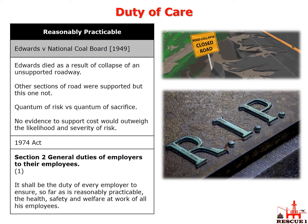It's important to get a full grasp on the reasonably practicable side of this case. What the judge was actually saying when he made his ruling was that if the cost to reduce the dangers is so disproportionate to the level of risk and the likelihood of it occurring, then those measures don't need to be taken. It's also important to remember that the size of the company and its financial resources have absolutely no bearing on whether a matter is reasonably practicable or not.